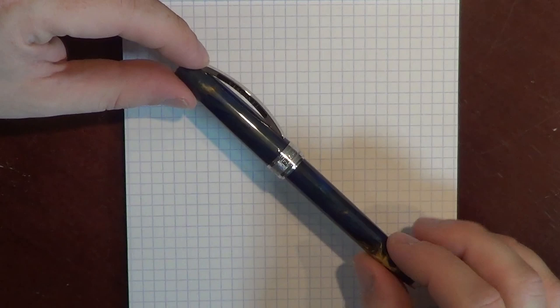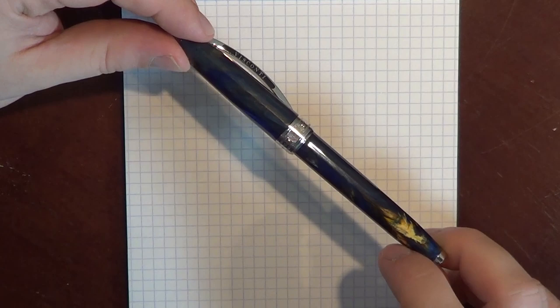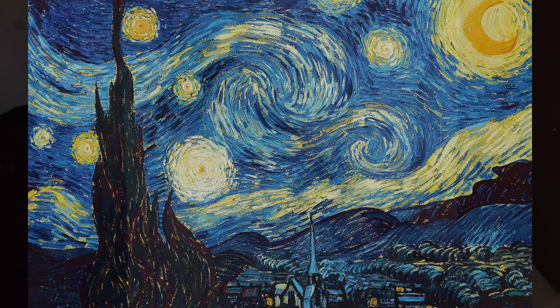All right, so here we are with the Visconti Van Gogh. Just do a quick once around so you can see what the acrylic looks like. I mean there's quite a bit of depth. It's a very pretty acrylic. Particularly like the swirled yellow that is in here.